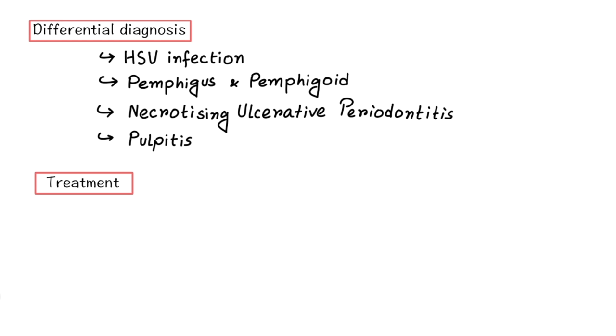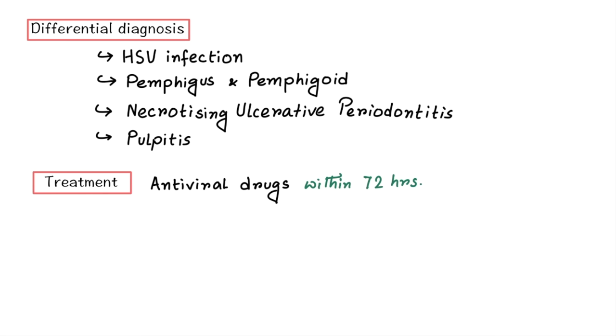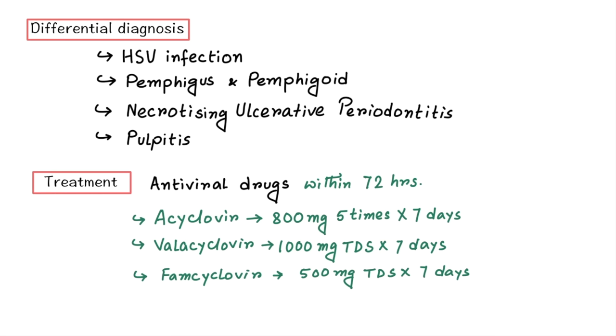Now treatment part. Adequate antiviral drug should be administered ideally within 72 hours of onset of the disease. It is essential to reduce the pain, duration and future post-herpetic neuralgia. You can give acyclovir 800 mg 5 times a day for 7 days. Otherwise valacyclovir 1000 mg thrice a day for 7 days or famciclovir 500 mg thrice a day for 7 days.